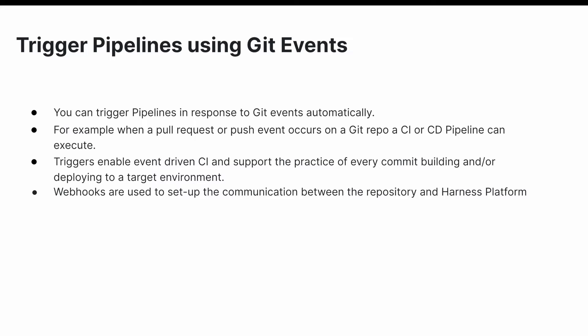You can trigger pipelines and respond to Git events automatically — for example, when a pull request or push event occurs in a GitHub repository, the pipeline can execute. Triggers enable event-driven CI and support the practice of every commit building or deploying to a target environment. Webhooks are used to set up the communication between the repository and the Harness platform.